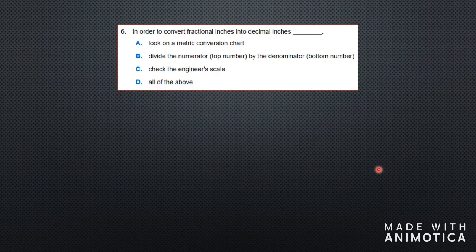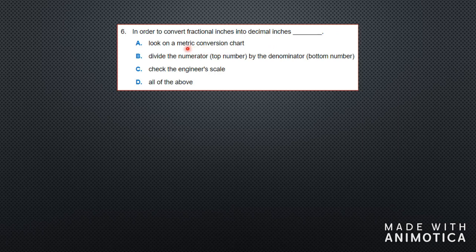Question six: in order to convert fractional inches into decimal inches — notice the units are fractional inches and decimal inches, not millimeters or meters. Should you look on a metric conversion chart? No, because metric has to do with meters, millimeters, centimeters, which is not what we're talking about. The correct answer is: divide the top number by the bottom number to get the decimal.